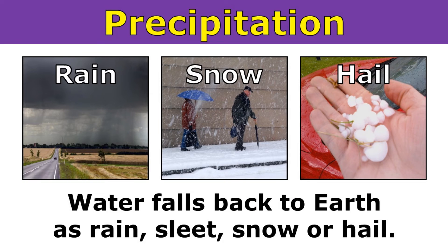Precipitation. Whenever water falls back to earth, as rain, sleet, snow, or hail, we call it precipitation. Rain is the most common form of precipitation.